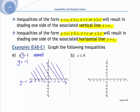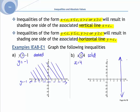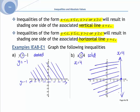I want all y values greater than or equal to -1, so the shaded region is above that line. For x ≤ 4, we have a less than or equal to sign, so it's going to be a solid line. We graph x = 4 — a vertical line through x = 4 — and shade everything to the left, where x is less than or equal to 4.